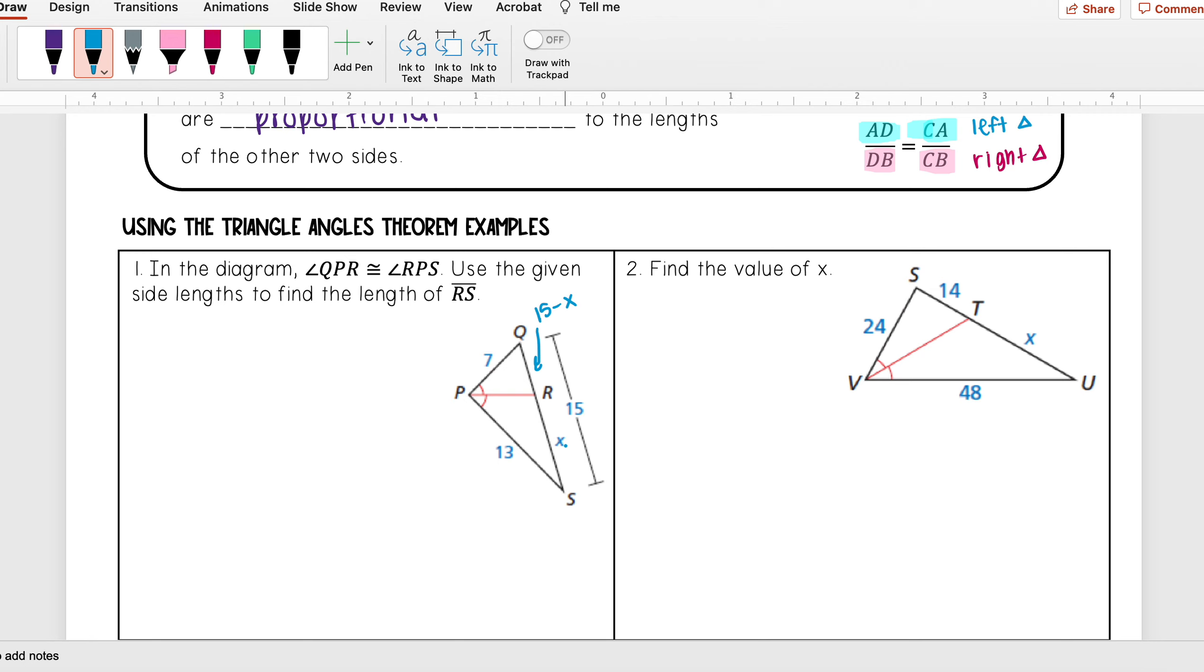Because if you think about it, if x was 8 for instance, I would know to find QR by doing 15 minus 8 to be 7. But since we don't know it, it's just x. So QR is 15 minus x.